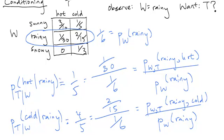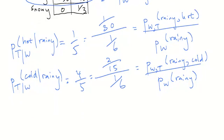And the same was true up here. The probability of hot given rainy is the same thing as the probability of rainy and hot divided by the probability of what we're conditioning on, rainy. So, in general...